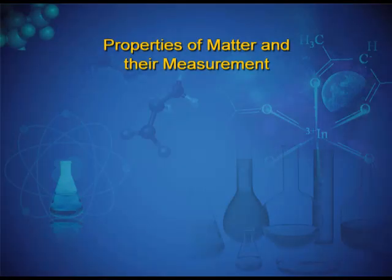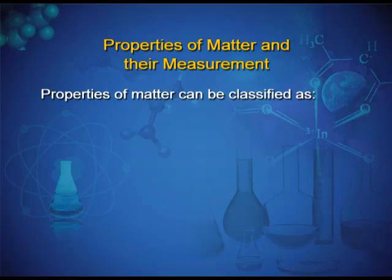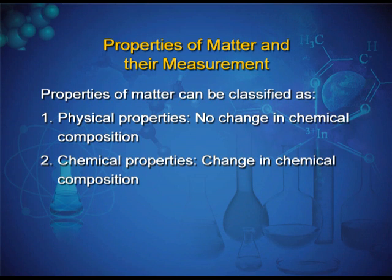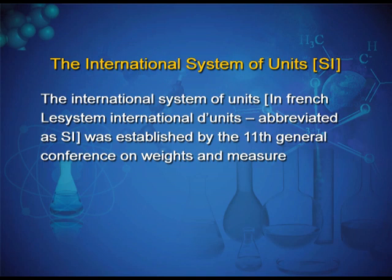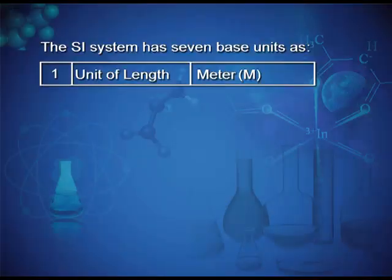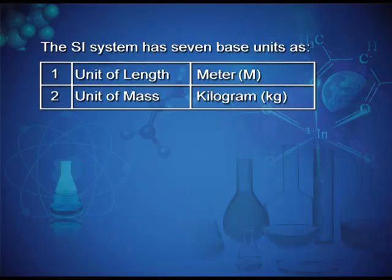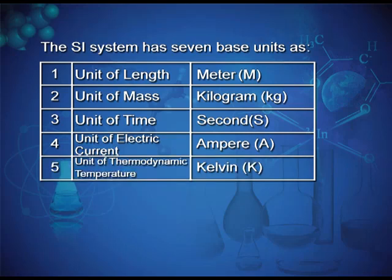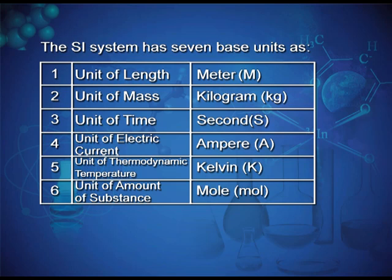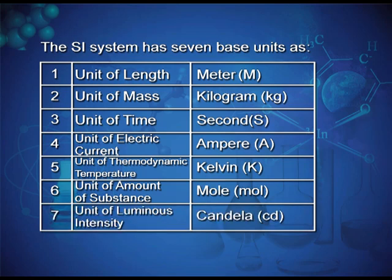Properties of matter and their measurement. Properties of matter can be classified as physical properties and chemical properties. In physical properties there is no change in chemical composition, while in chemical properties there is a change in chemical composition. The International System of Units (SI) was established by the 11th General Conference on Weights and Measures. The SI system has seven base units: meter (length), kilogram (mass), second (time), ampere (electric current), Kelvin (thermodynamic temperature), mol (amount of substance), and candela (luminous intensity).